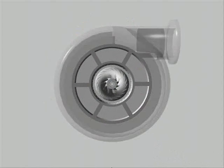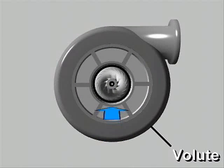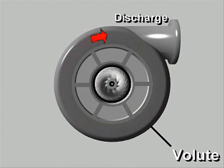The volute-shaped casing collects the slow-moving, high-pressure vapor from around the diffuser and conveys it to the discharge connection of the compressor.